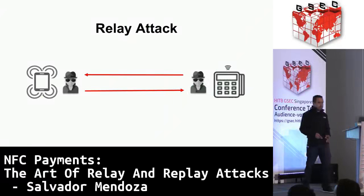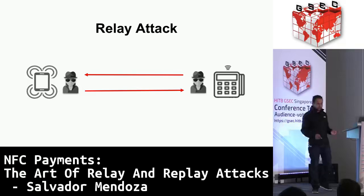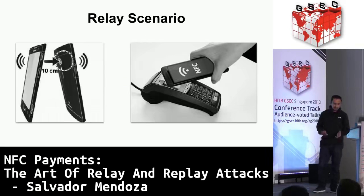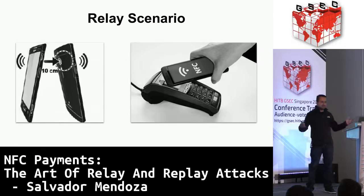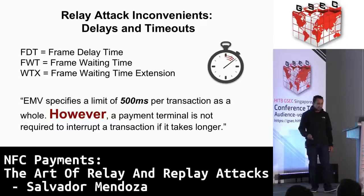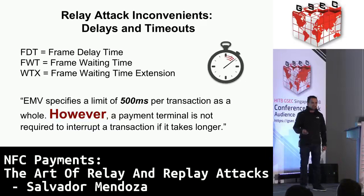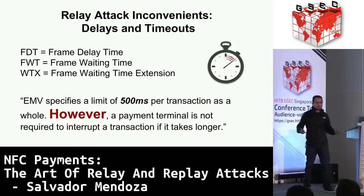Relay attacks are a more difficult technique but share the same idea. We need two devices - one close to the smart card and another close to the terminal or point-of-sale system. The idea is to have a fast device that can do this very quickly. If we think about the scenario, we have 10 centimeters in the real world for an NFC transaction, but the idea is how we can expand those 10 centimeters to 100 meters or kilometers. We have delays and timeouts in the NFC protocol - each transaction has to be done in 500 milliseconds. But there is no restriction in the terminals to stop the transaction if it takes longer, meaning I can make transactions for four to five seconds without problems. This gives us a chance to make relay attacks on the NFC protocol.